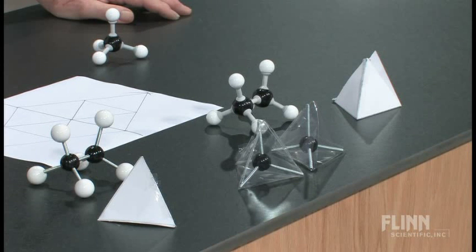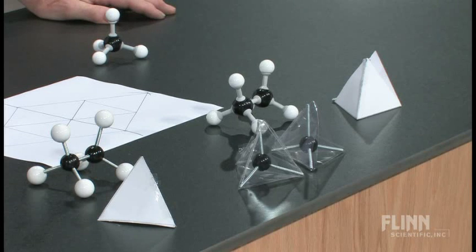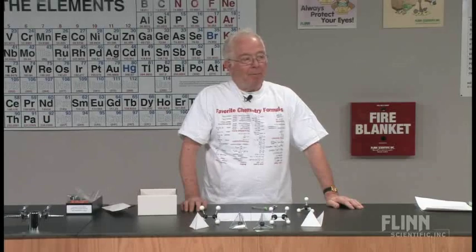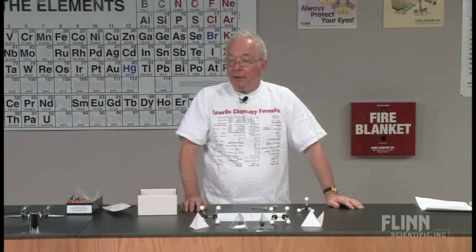Now the students can see inside the tetrahedron as to how the molecule is oriented. The central atom being a carbon atom and hydrogen atoms at each of the extremities, at each of the apices.